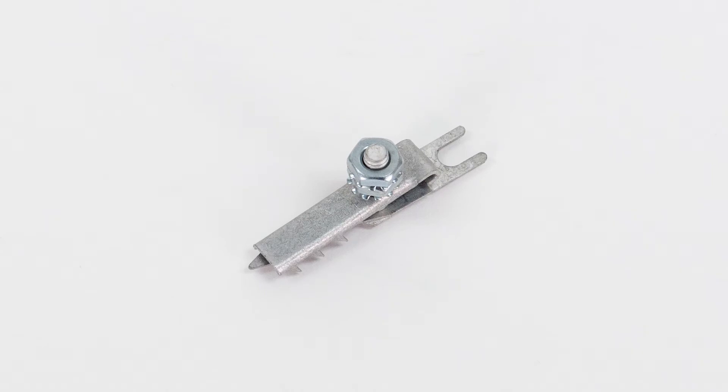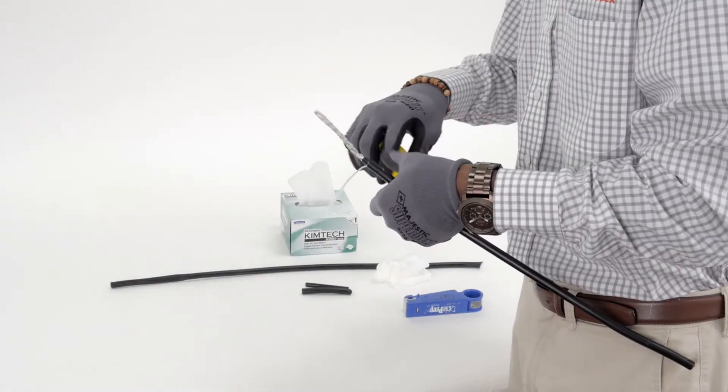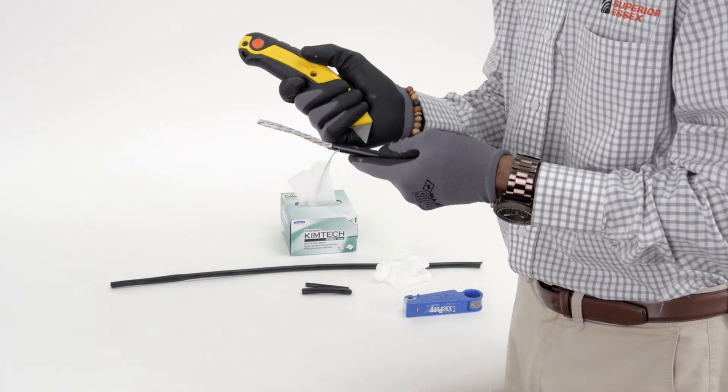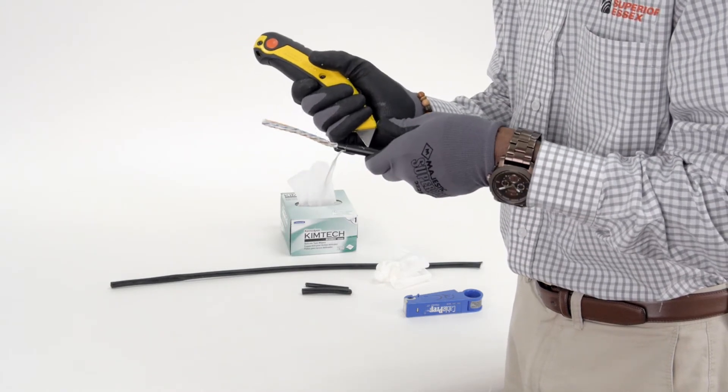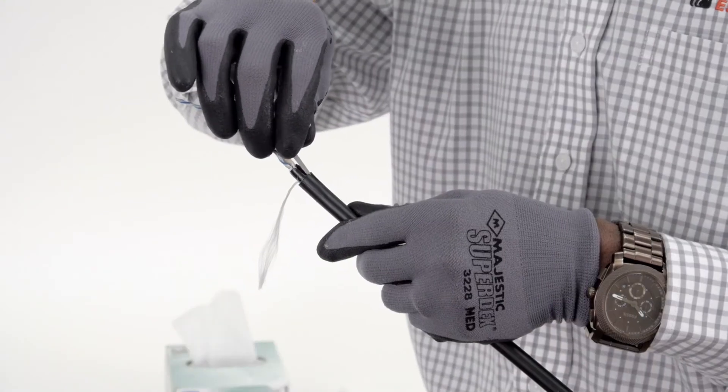The preferred method of bonding is to use a bullet bond that slides over the inner jacket underneath the shield. To accommodate the bullet bond, make a longitudinal cut of about 1 inch depending on the bond design in the outer jacket and shield to allow the outer jacket and shield to flare over the bullet bond.